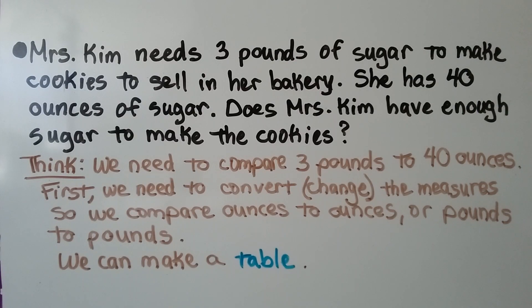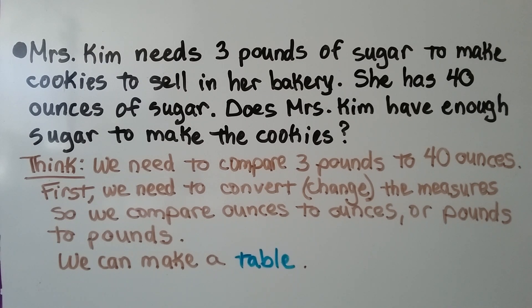Mrs. Kim needs three pounds of sugar to make cookies to sell in her bakery. She has 40 ounces of sugar. Does Mrs. Kim have enough sugar to make the cookies? We need to compare three pounds to 40 ounces.